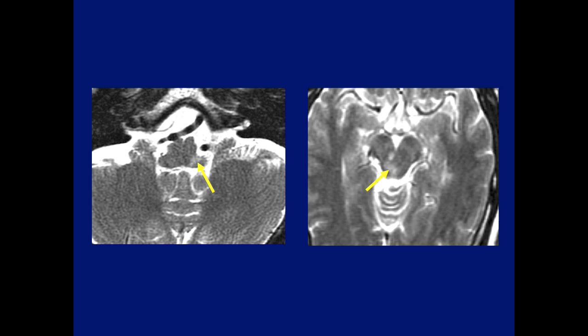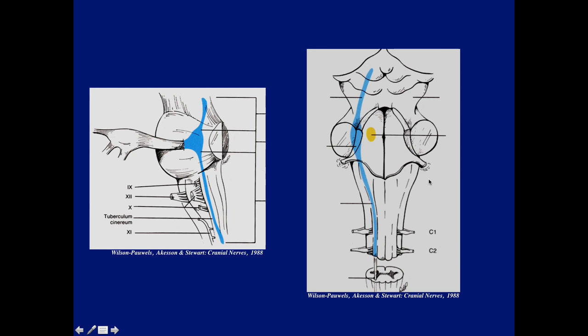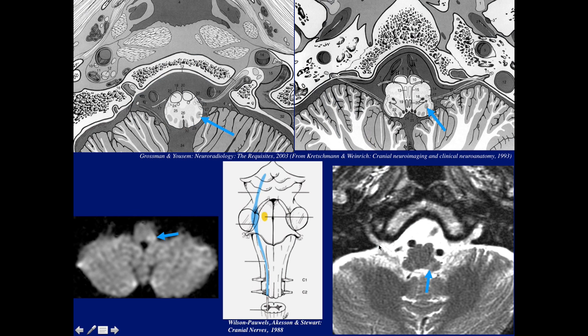Now why am I showing these two images — one in the medulla with abnormal signal and one in the brainstem at the level of the peduncles? The reason is because of the extensive size of the sensory nucleus of the trigeminal nerve. In yellow is the motor component, which is relatively small and limited to the floor of the fourth ventricle. In blue is the extensive sensory nucleus, which extends all the way from the superior cerebral peduncle and superior colliculus all the way down to the level of C2 — a massively elongated sensory nucleus.